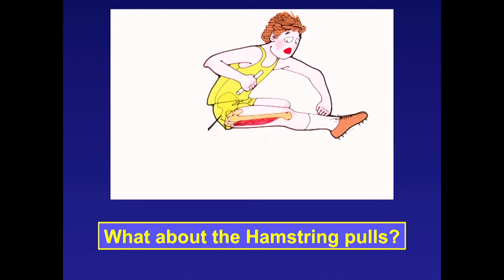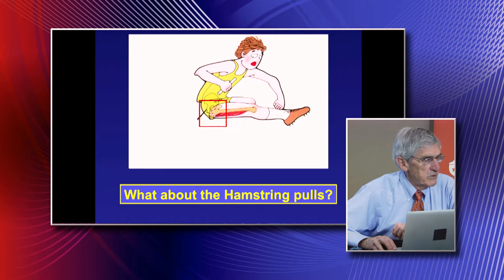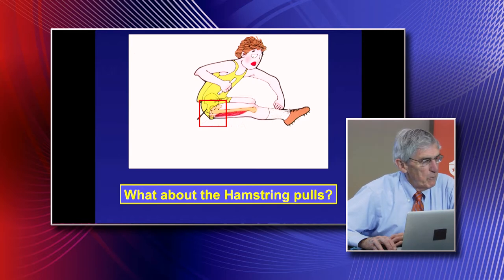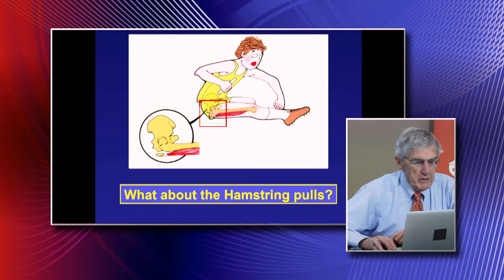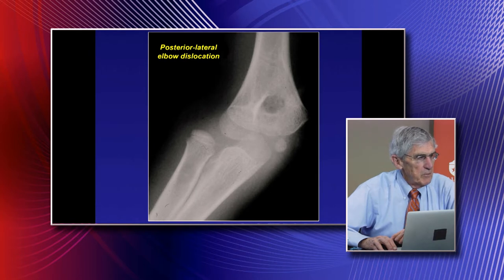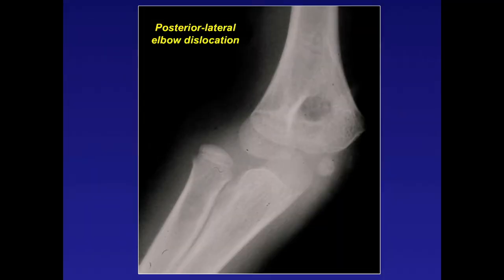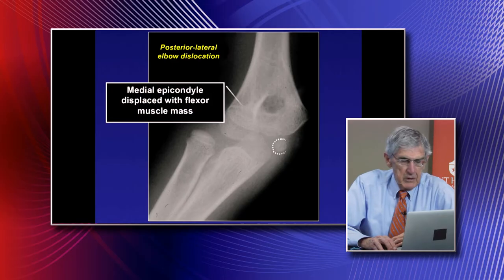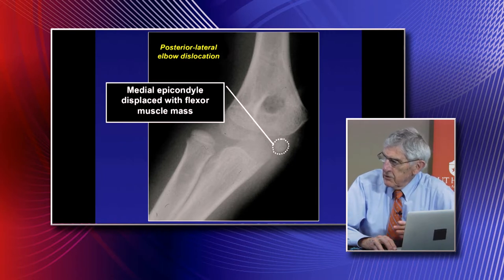A hamstring pull in the adult—where the semitendinosus, semimembranosus, and biceps are torn—results in an ischial apophysis avulsion in the pediatric age group, at the origin of those muscles. Similarly, a dislocated elbow in the adult results in failure of the medial epicondyle apophysis in the child, because it's weaker than the medial collateral ligaments—creating a specific injury pattern we'll discuss further.